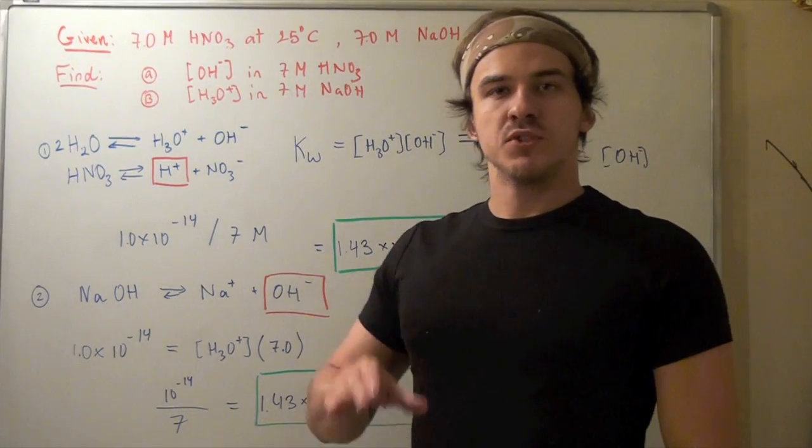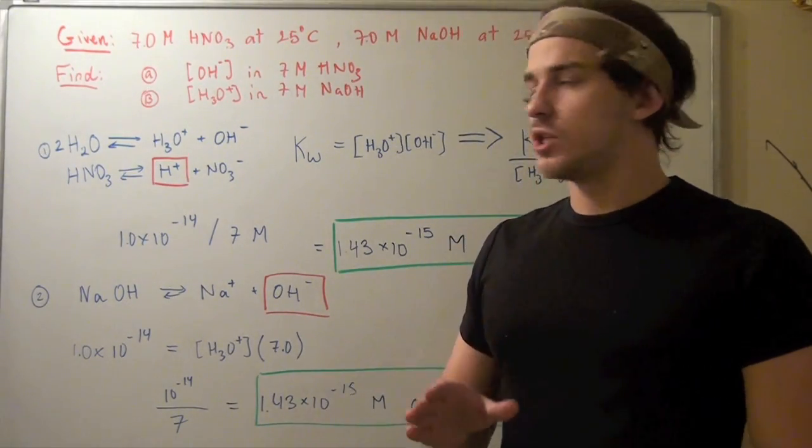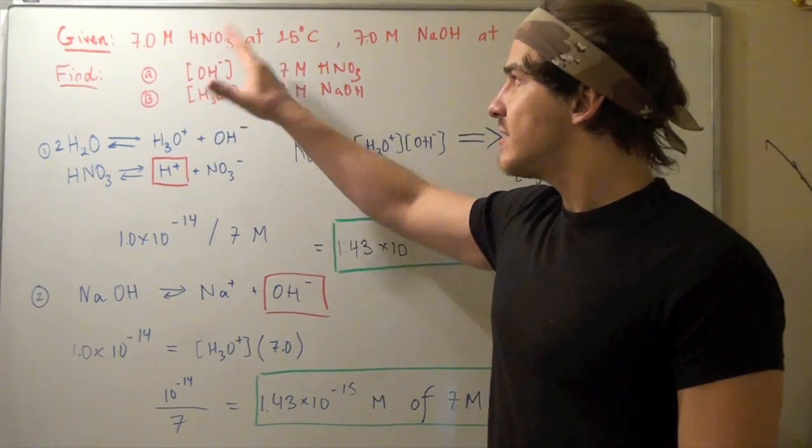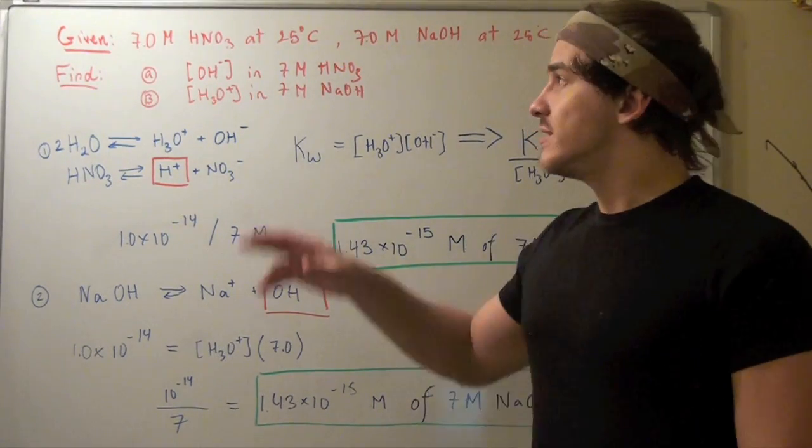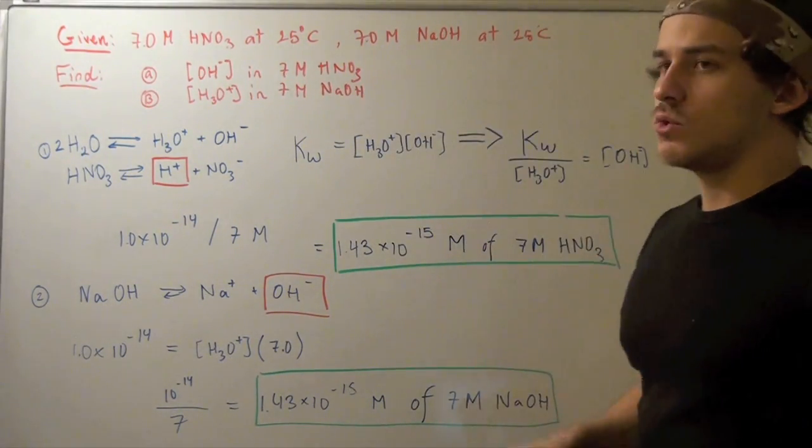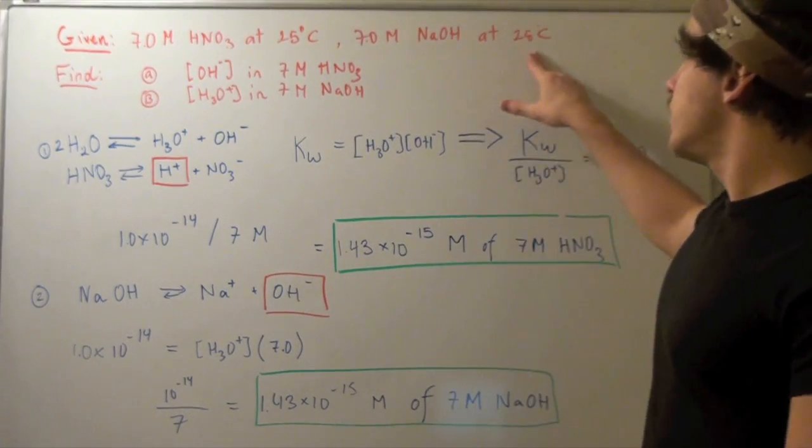In this example, we begin with two solutions. Our first solution is a 7 molar nitric acid solution given at 25 degrees Celsius. Our second solution is a 7 molar sodium hydroxide solution given also at 25 degrees Celsius.